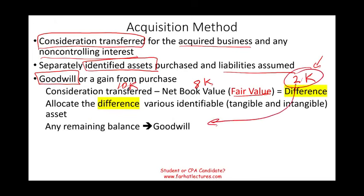Goodwill means you paid extra for assets you really cannot identify. Why did you pay that extra $2,000? It could be because of the location of the business — the location is not on the balance sheet. Maybe the reputation of the business, or the chef that works there. The point is, goodwill is that excess amount you paid over the net fair value of that business — net book value at fair value. That's what goodwill is.